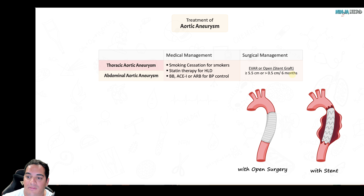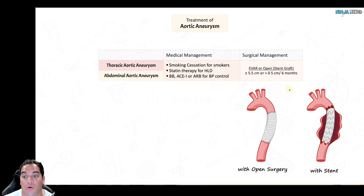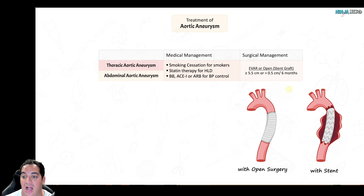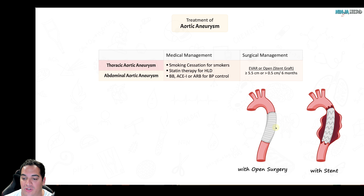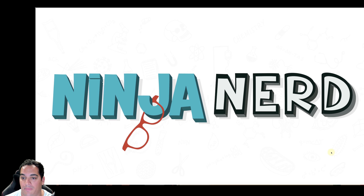Surgical management can be elective under surveillance criteria, or urgent and emergent when complications or shock arise. Surgery options include open repair with grafting or endovascular aortic repair (EVAR) with a stent.